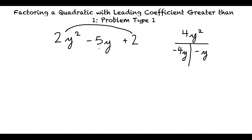When we factor a quadratic, the result will be two binomials. So let's draw two sets of parentheses that we will have our binomials in.